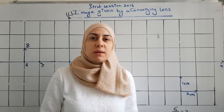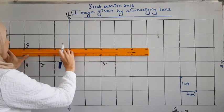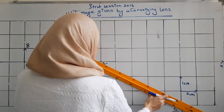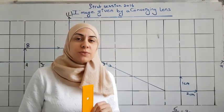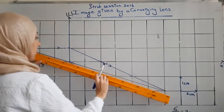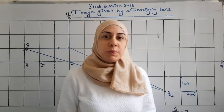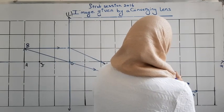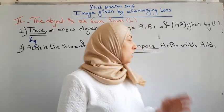To trace image A2B2, we take two rays starting from B. The first ray is parallel to the optical axis and continues passing through F'. The second ray passes through O and continues without deviation. The two rays meet at point B2. From B2, we draw a perpendicular to the optical axis to find A2, giving us the image A2B2.